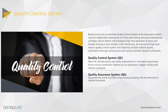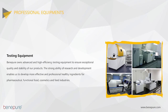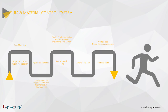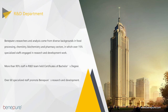Benipure has its own QC department and test laboratory. Products can be fully tested, and the QA department is responsible for supervising all related operations to conform to GMP standards and requirements. We own advanced and high-efficiency test equipment to ensure exceptional quality and stability of our products. We have a complete and strict raw material control system — from supplier approval to material release, each process follows GMP standard requirements.